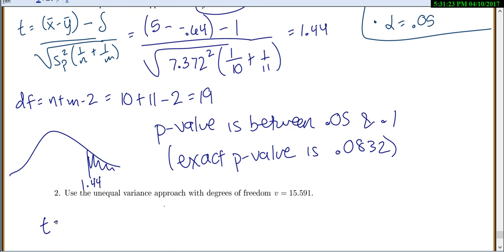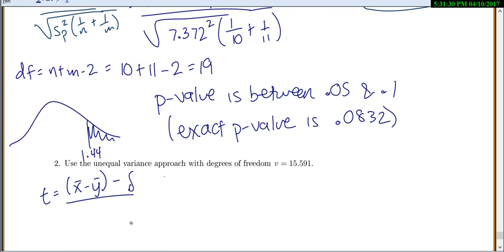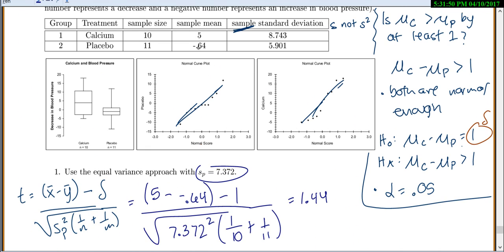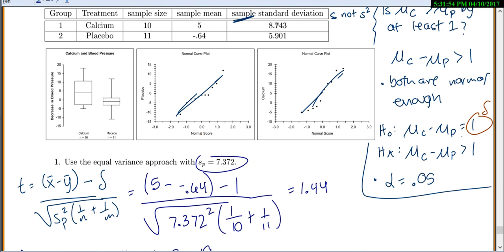Unequal degrees of freedom. You do the difference in the sample means minus, again, that delta here, hypothesized difference in the population means, over the variance for x squared over n, sample size for x, and the variance for y over its sample size. Really, you just make sure you put all the numbers in the right spots. The sample means are 5 and negative 0.64, and these are the standard deviations, and we'll need to make sure we square them because we really wanted variances.